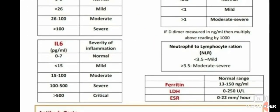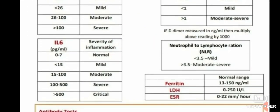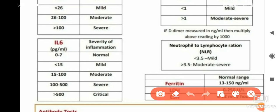For Interleukin-6 (IL-6): 0 to 7 is normal, less than 15 is mild, 15 to 100 is moderate, 100 to 500 is severe, and if it is more than 500, we can say the patient is critically ill.